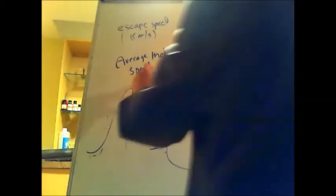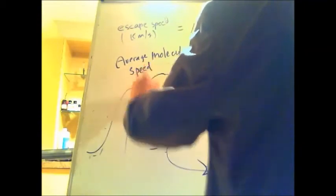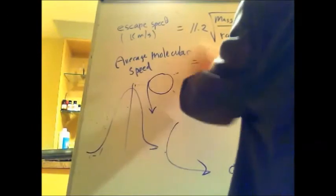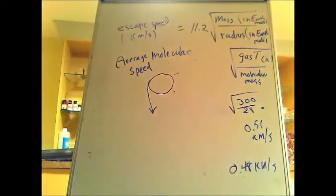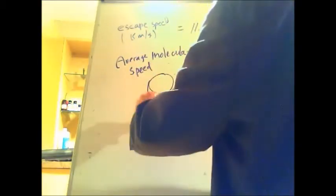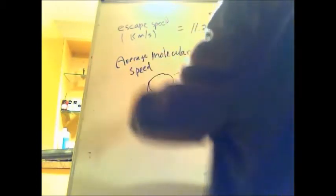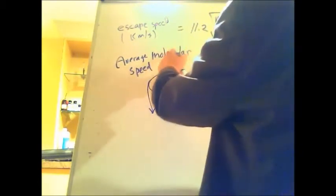We can tell Mercury's rotation by looking at the Doppler shift. As Mercury rotates, an object rotating towards you or away from you produces a Doppler shift. So if you're trying to radar-image or laser-image something like this, and the planet is moving, the signal you're bouncing off it is going one way at one point and the other way at another point.